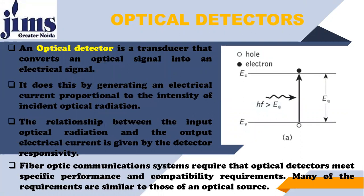Optical Detector is the main section of Optical Receiver — it is used in the Optical Receiver. The function of this Optical Detector is the inverse of Optical Source: it converts Optical Signal into Electrical Signal, whereas the function of Optical Source is to convert Electrical Signal into Optical Signal.